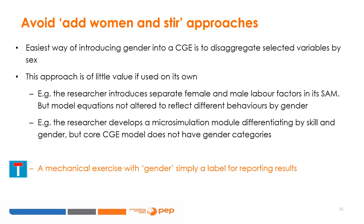For example, the researcher may introduce separate female and male labor factors in SAM accounts, but if model equations themselves are not formulated through a gender analytical lens, this risks turning into a mere mechanical exercise where gender becomes simply a label for calculating shares and reporting results. Model equations and associated parameters would need to be changed to represent the reality of a labor market where both supply-side and demand-side factors affect different groups of female and male workers differently. Similarly, a micro-simulation model that differentiates household members by skill and gender, but is linked to a core CGE model without gender categories, severely limits analysis and might lead to misleading results.